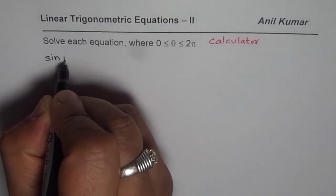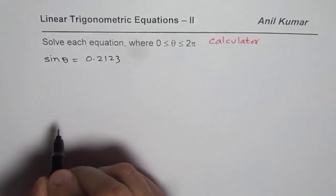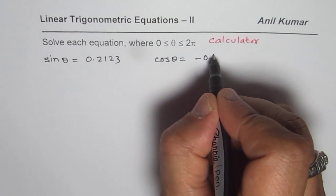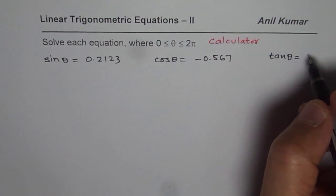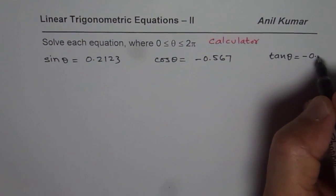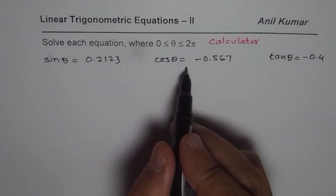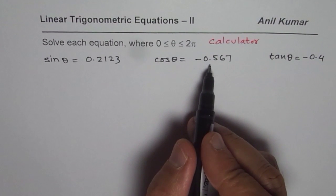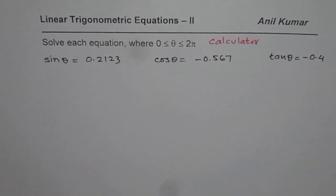Since we are using calculator, let me take some decimal values like sin θ = 0.2123. Let's use cos θ as a negative value of -0.567. And then tan θ, let's take negative value of -0.4. Now, tan θ ranges from minus infinity to plus infinity. You can take any values here. But for sine and cosine, the value should be between 1 and -1. If I take a value more than absolute 1, in that case we will get an error. The solution does not exist.